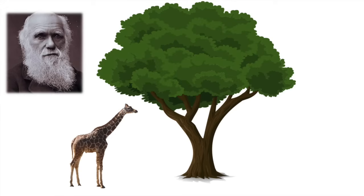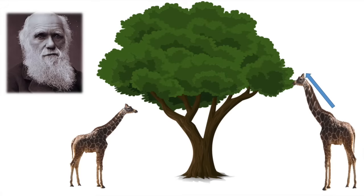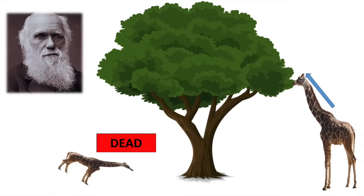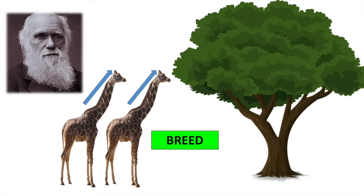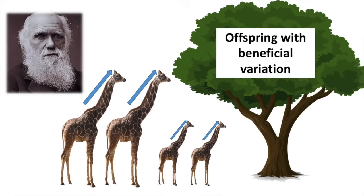Charles Darwin's theory of evolution by natural selection is this. What you've got here is a giraffe with a short neck, and what you've got here is a giraffe with a longer neck. Both of them show variation. The shorter neck giraffe will die because it cannot feed and eat. The giraffe with the longer neck can survive because it can feed. The giraffe with the longer neck will survive and then breed with other long neck giraffes because the short neck giraffes have died.